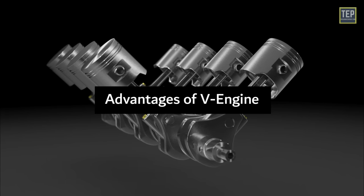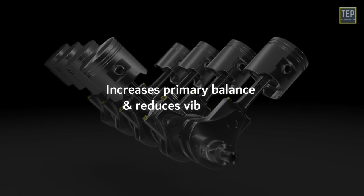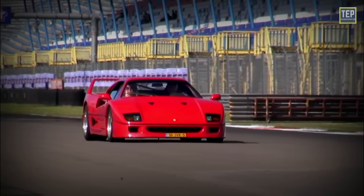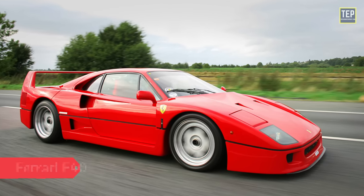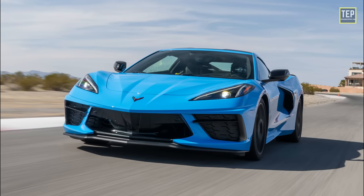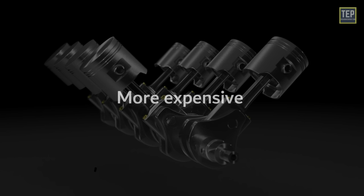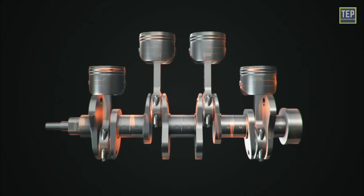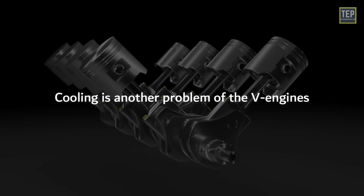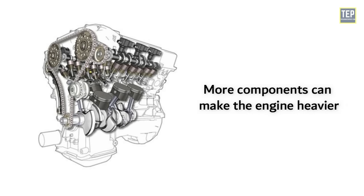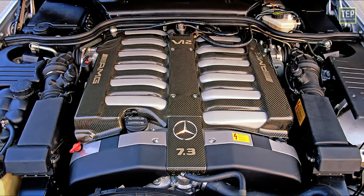V engines are smaller than other engine types and improve aerodynamics. They increase primary balance, reduce vibrations, and provide smoother operation for high-speed performance. The compactness of V engines makes them suitable for high-end sports cars. High-end superbikes use a V4 design, and high-end cars such as saloons, sports cars, and SUVs commonly employ V6 and V8 designs. However, V engines can be more expensive because they have more parts than inline engines, and their complex design makes them difficult to build. Cooling is another challenge, and V engines are generally not very fuel efficient, so cars equipped with them typically fall into the luxury and sports categories.